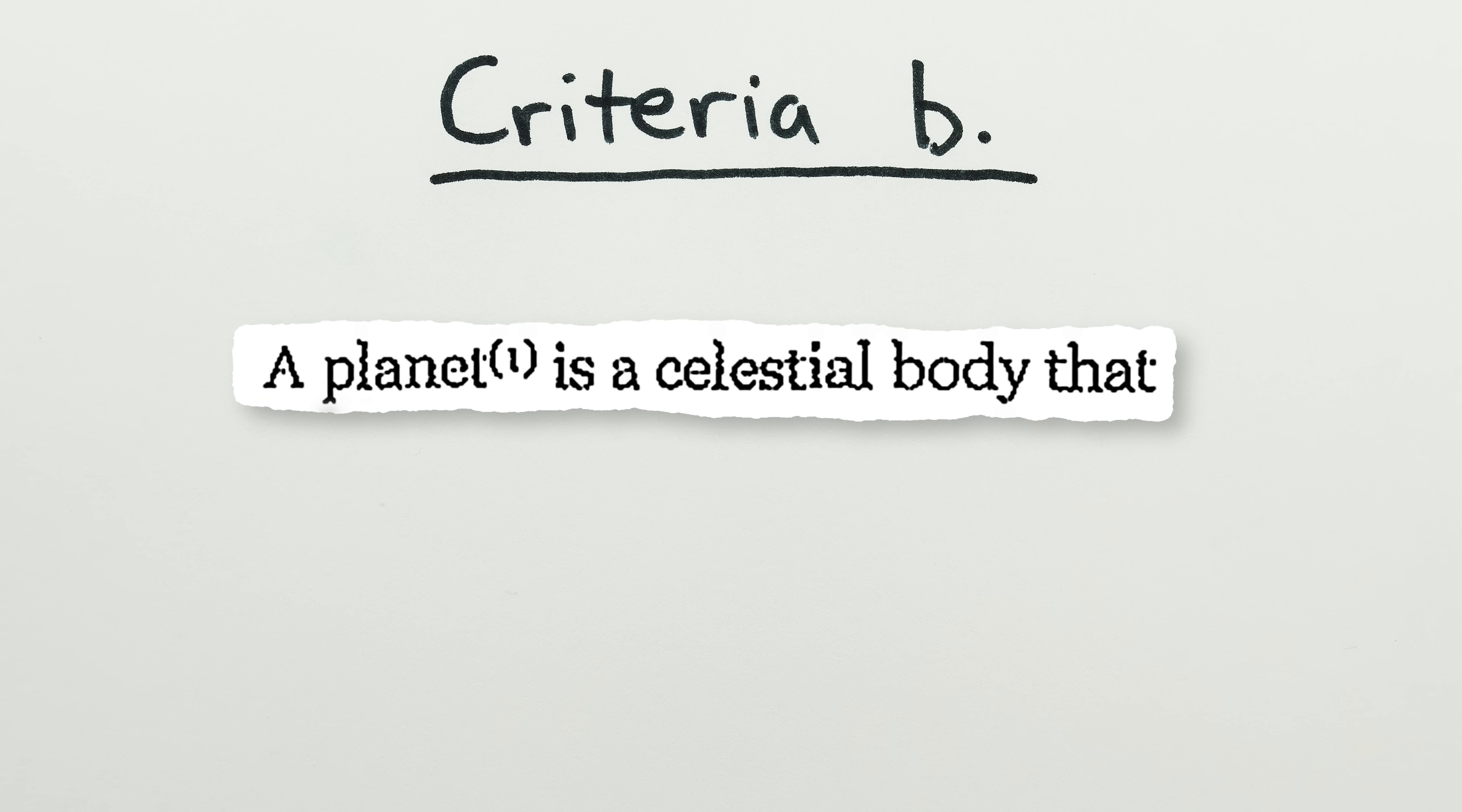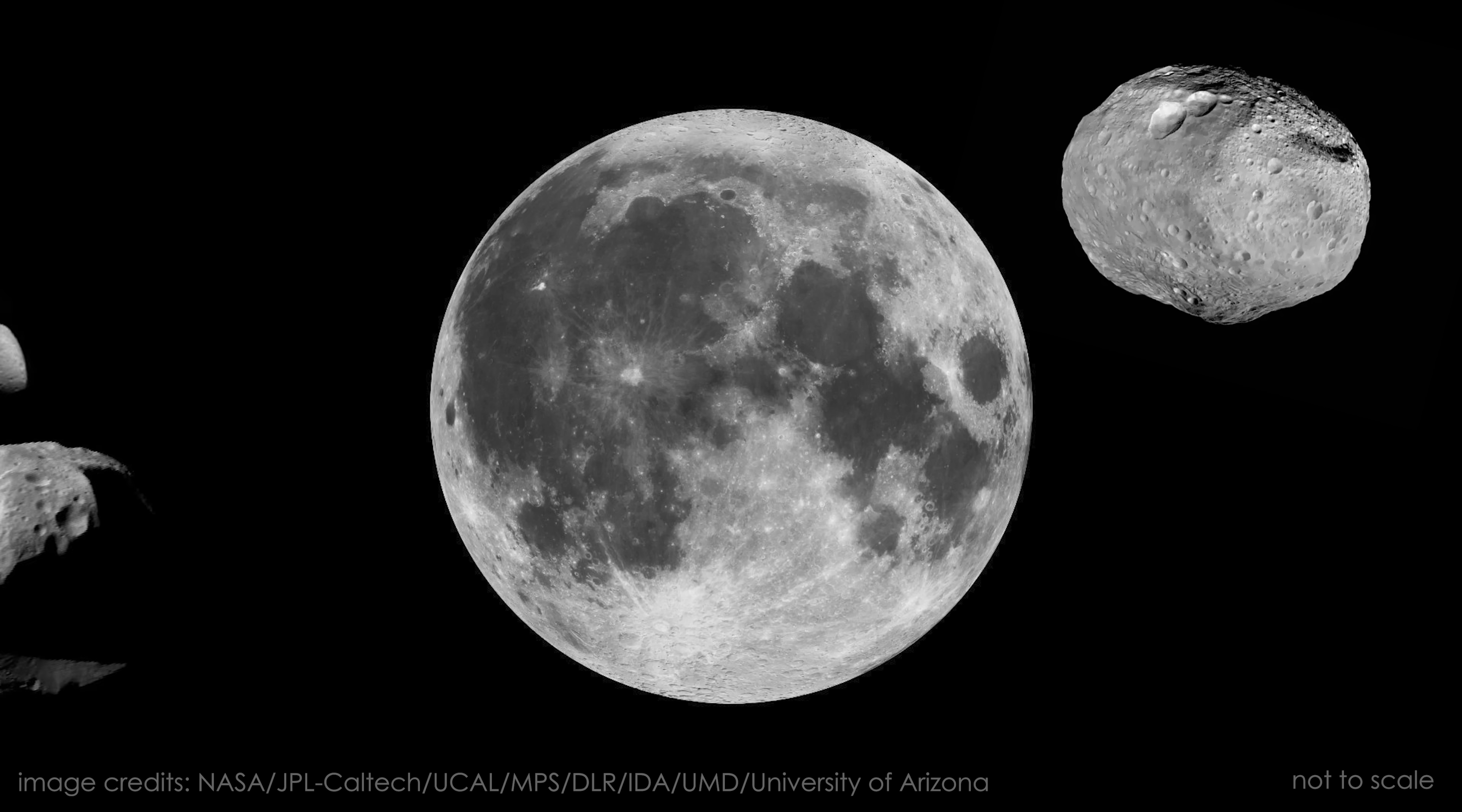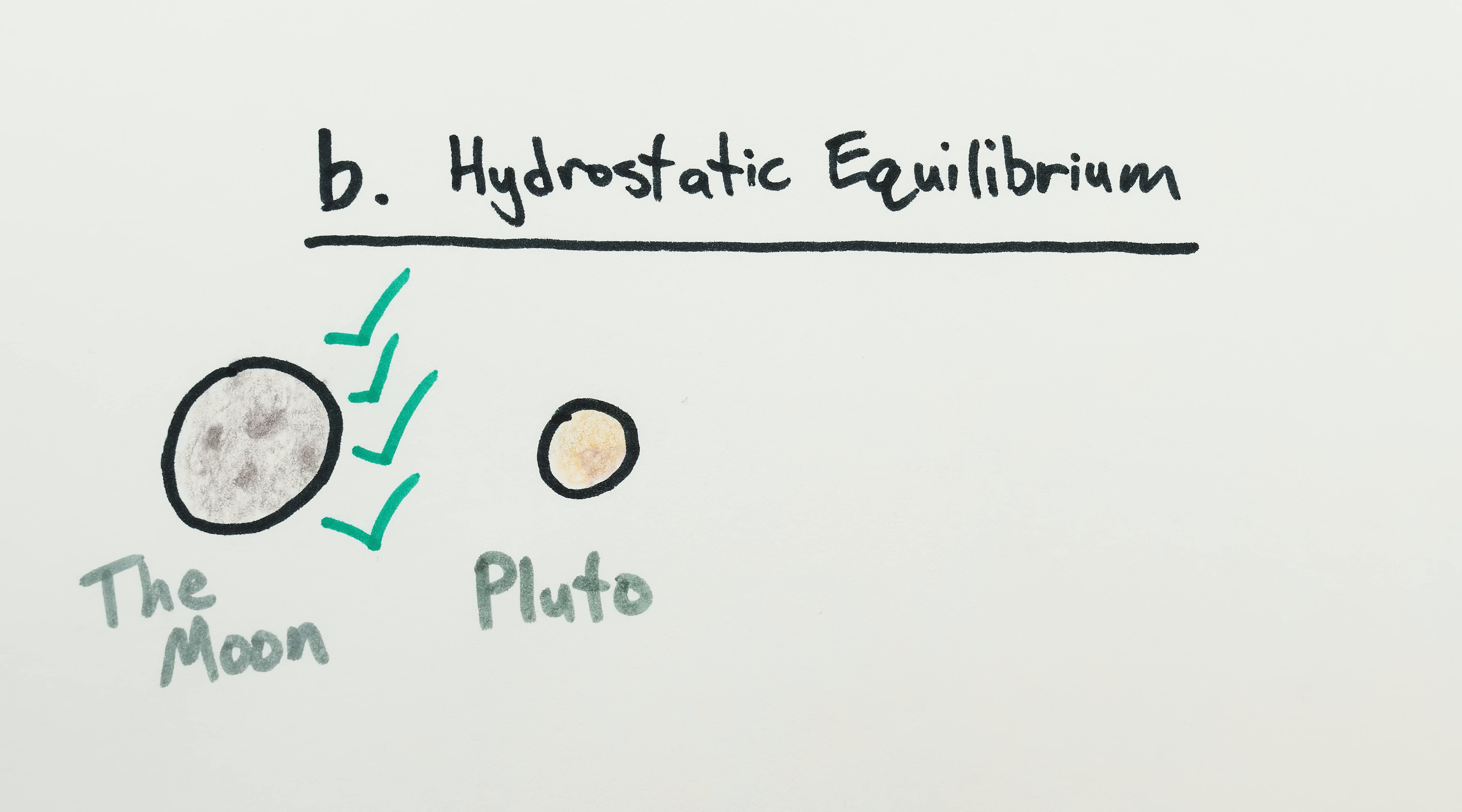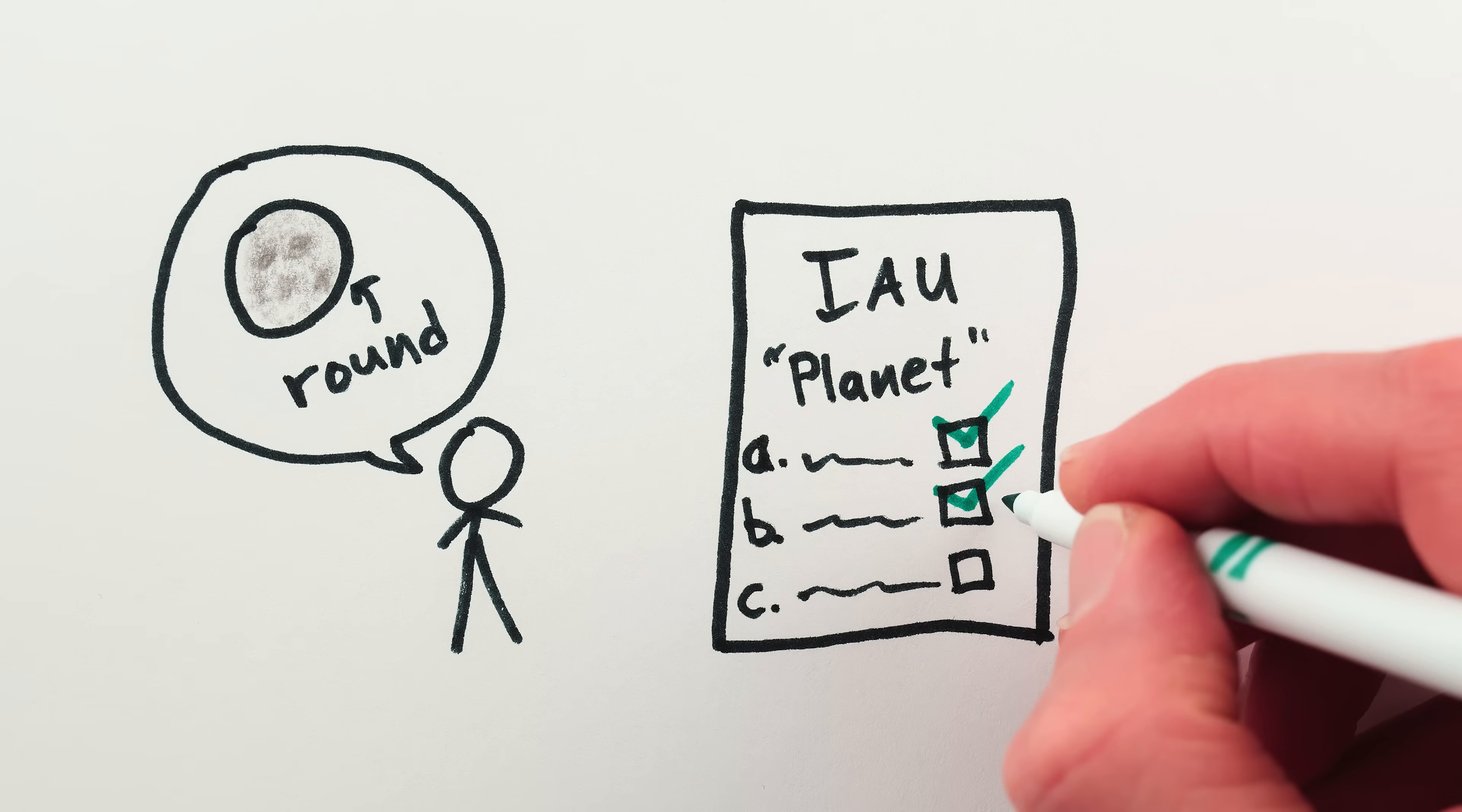Now, criteria B. A planet is a celestial body that has sufficient mass for its self-gravity to overcome rigid body forces so that it assumes a hydrostatic equilibrium, or nearly round, shape. It's fairly evident that the Moon is, like the Earth, a round sphere, and not an irregularly shaped object like many smaller asteroids, comets, and other moons that don't have enough gravity to pull themselves into rounded shapes. The Moon not only meets this second criteria, it meets it by a long shot. The Moon is many times more massive than other gravitationally rounded objects in our solar system, like Pluto, the asteroid Ceres, etc. In short, the Moon meets criteria B. It has sufficient mass to be gravitationally rounded.